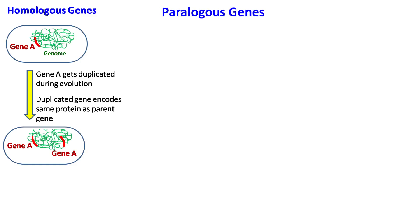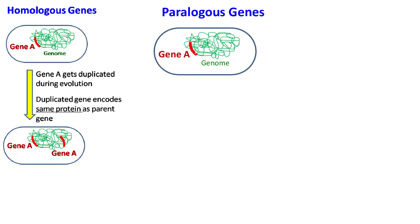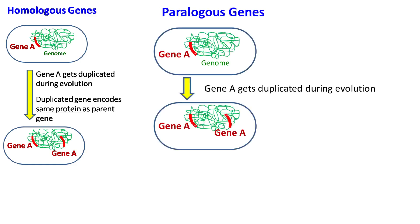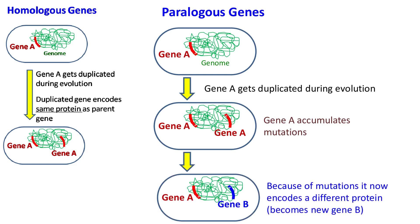Paralogous genes. During evolution, a gene can undergo duplication and accumulate mutations. Because of mutations, the gene will now encode a protein with a different function. Such genes are called paralogous genes.